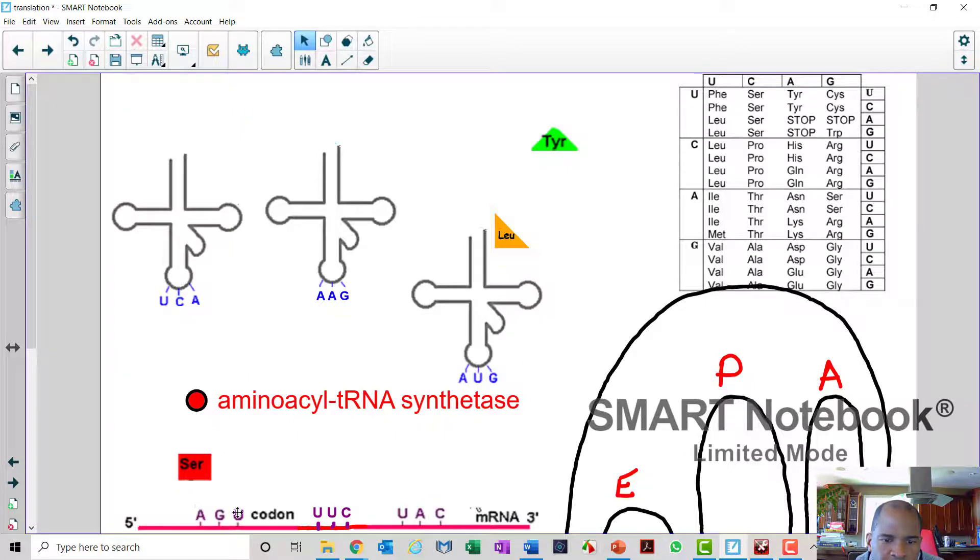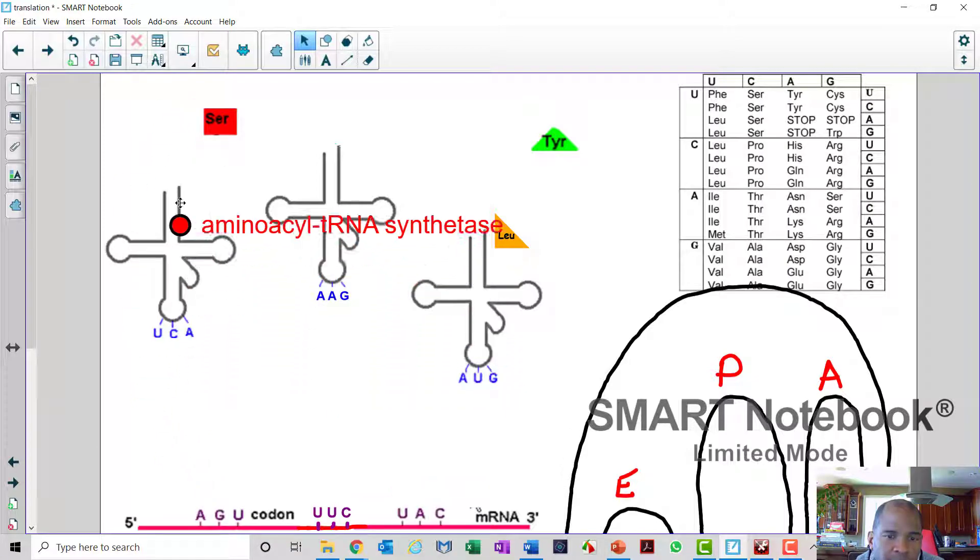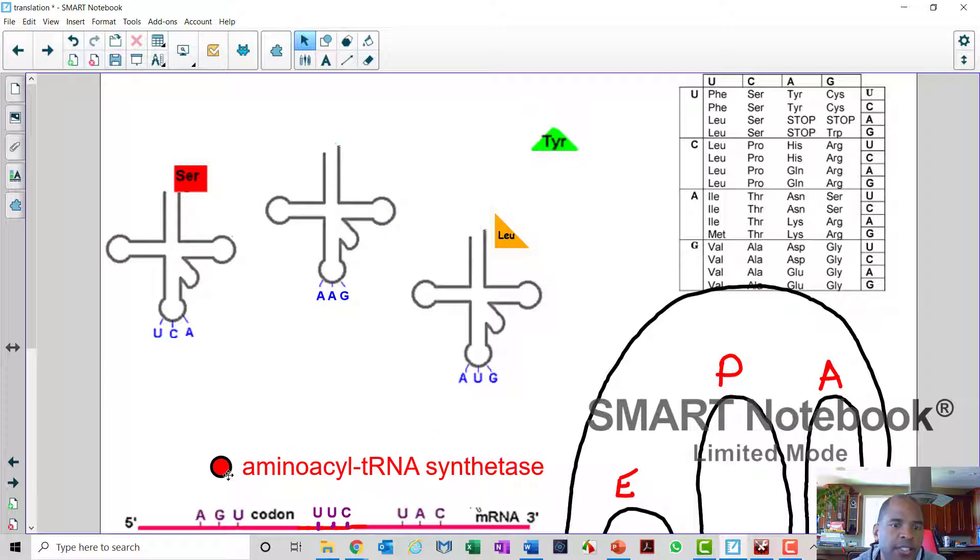So serine is AGU. So I'm just going to match it up right here. And what's the anticodon for AGU? It's going to be A-C-U. So this is the tRNA for this codon. So serine needs to be bound to this transfer RNA. So along comes an aminoacyl tRNA synthetase. It's going to facilitate that reaction. And now it's charged.